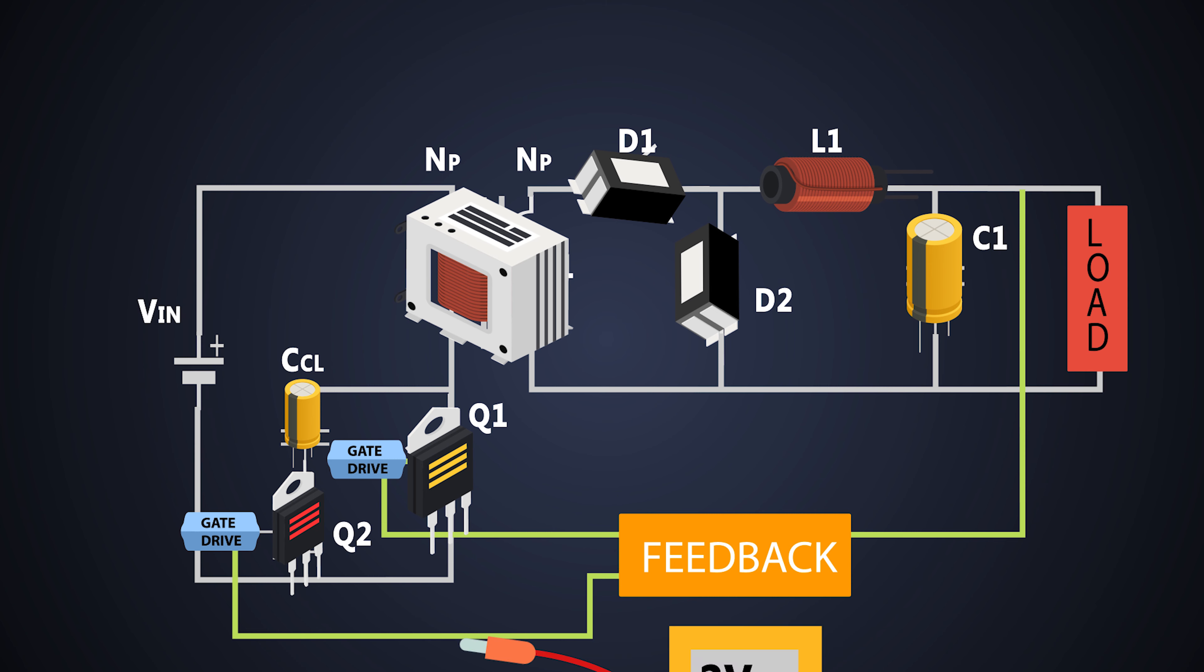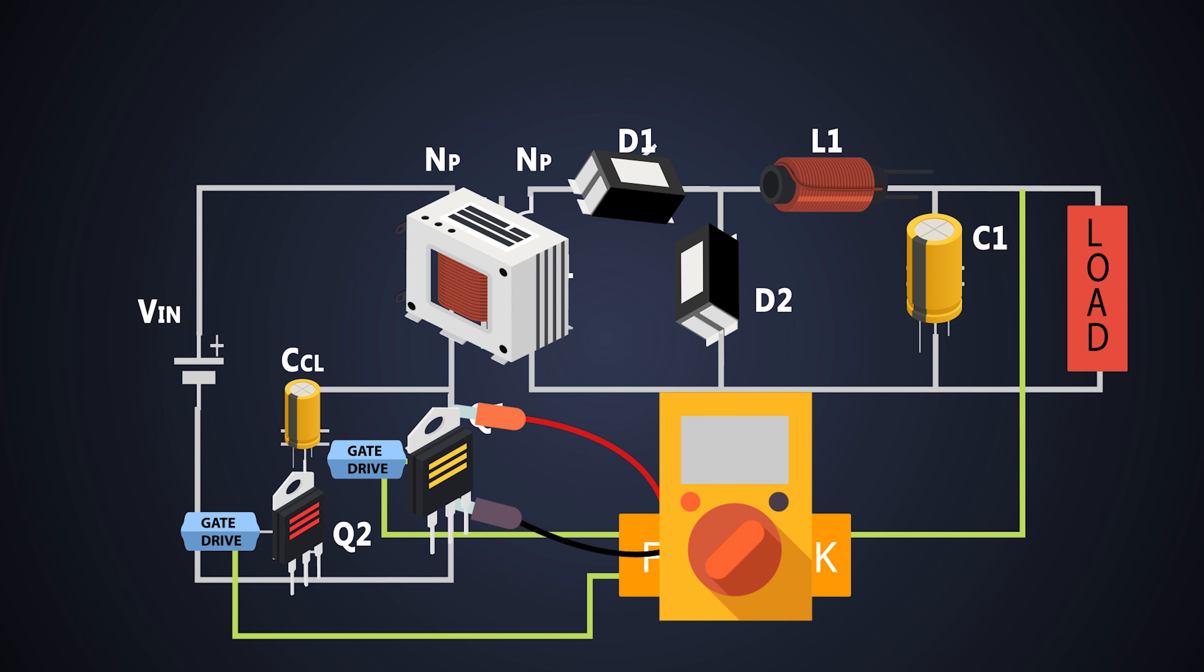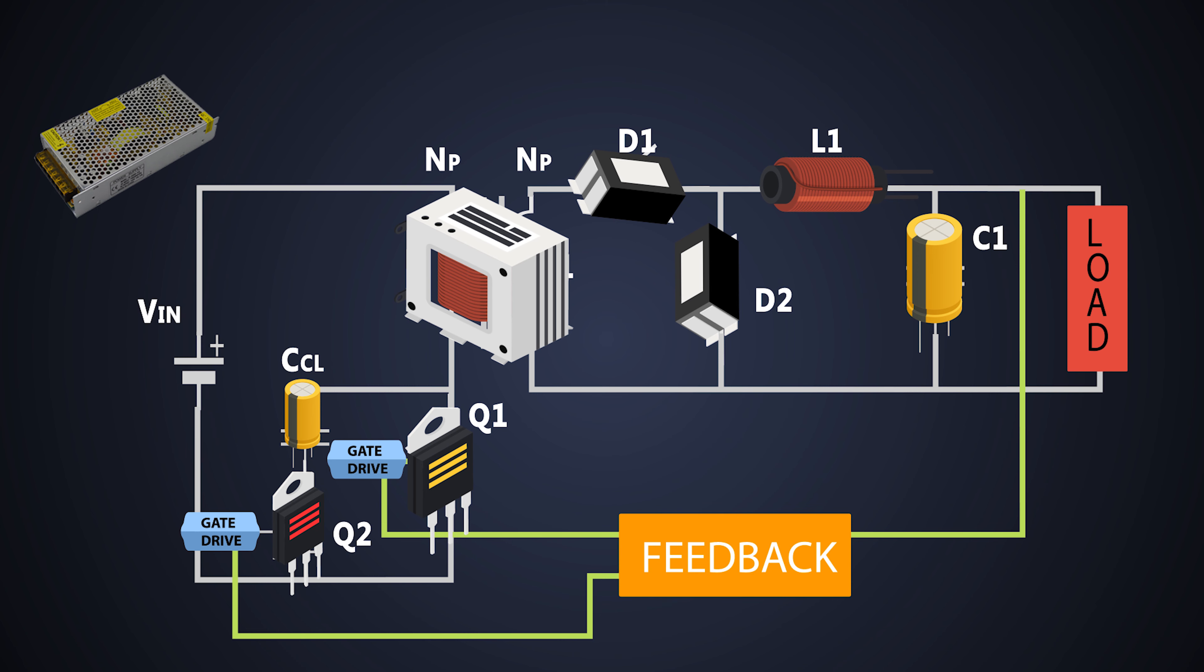The voltage across MOSFET doesn't go up to twice of input voltage as it was reaching in the tertiary winding configuration. So this stress on the MOSFET is minimized, hence we can go up to higher power applications. The value of inductor L1 can be minimized because of the leverage of high duty cycle ratio.